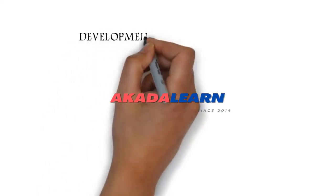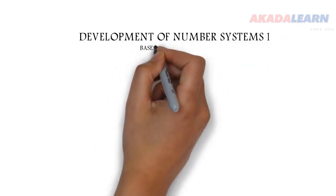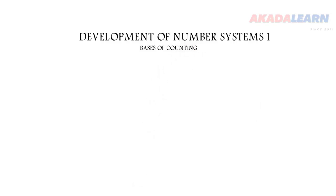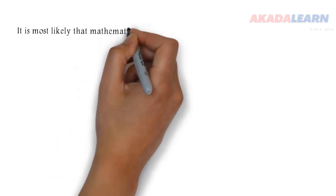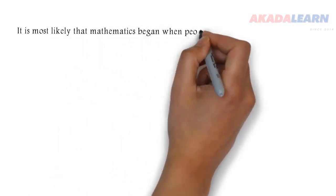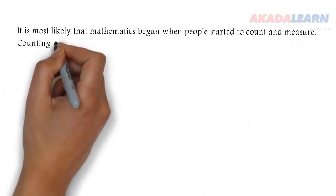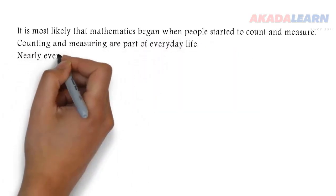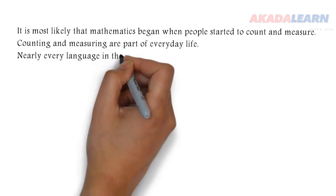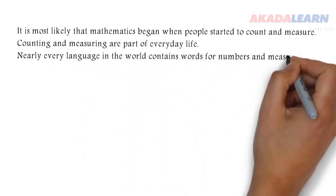Today we'll be looking at development of number systems and the subtopic is basis of counting. It is most likely that mathematics began when people started to count and measure. Counting and measuring are part of everyday life. Nearly every language in the world contains words for numbers and measures.